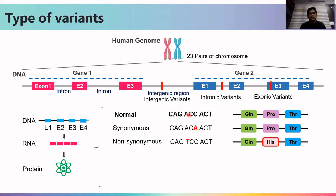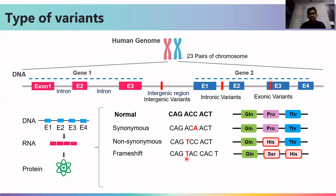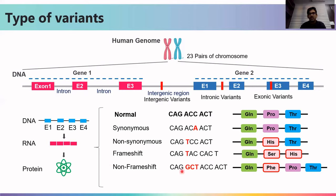At the fourth position, when there is a change from A to T and the amino acid changes from proline to histidine, this is known as a missense or non-synonymous mutation. If there is an addition or deletion of any nucleotide, that will change the entire reading frame downstream — for example, instead of proline there is serine, and downstream of threonine there is histidine. Such a mutation is known as a frameshift mutation. If the addition or deletion occurs in a multiple of three, it is a non-frameshift mutation, resulting in the addition of an amino acid such as phenylalanine.